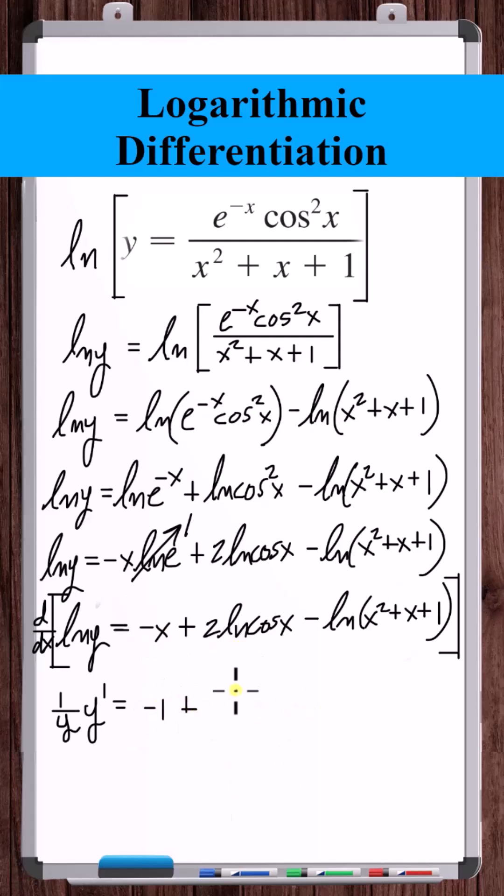Derivative of two natural log cosine of x is two over cosine x times minus sine of x, which is two tangent x.